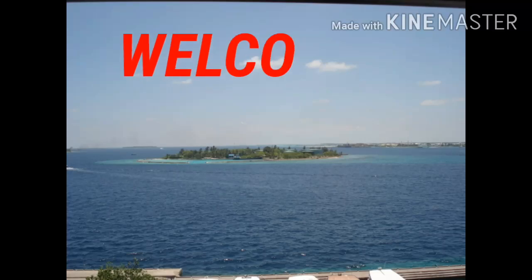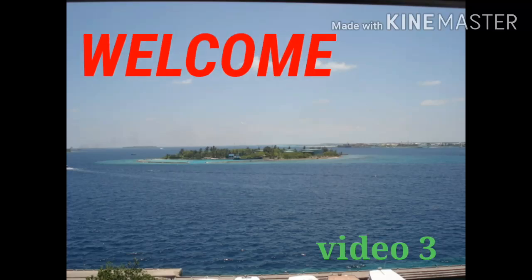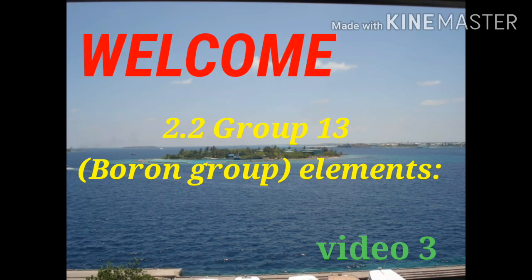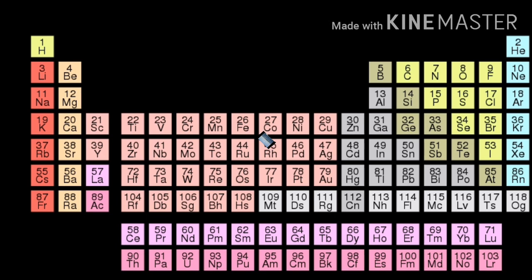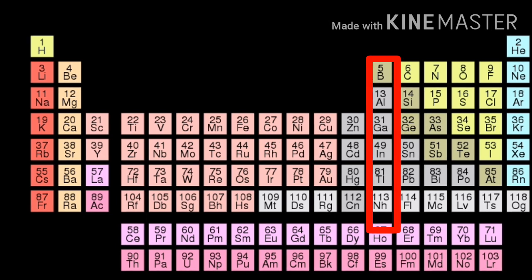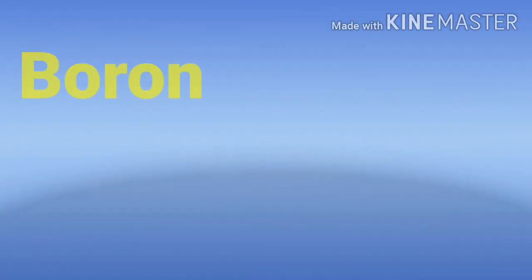Hello students, welcome back. This is video number 3. Topic is group 13, boron group elements. The first member of the 13th group is boron, so it is called boron group elements. That group is highlighted by red color. Now we will discuss about boron and its important ores.